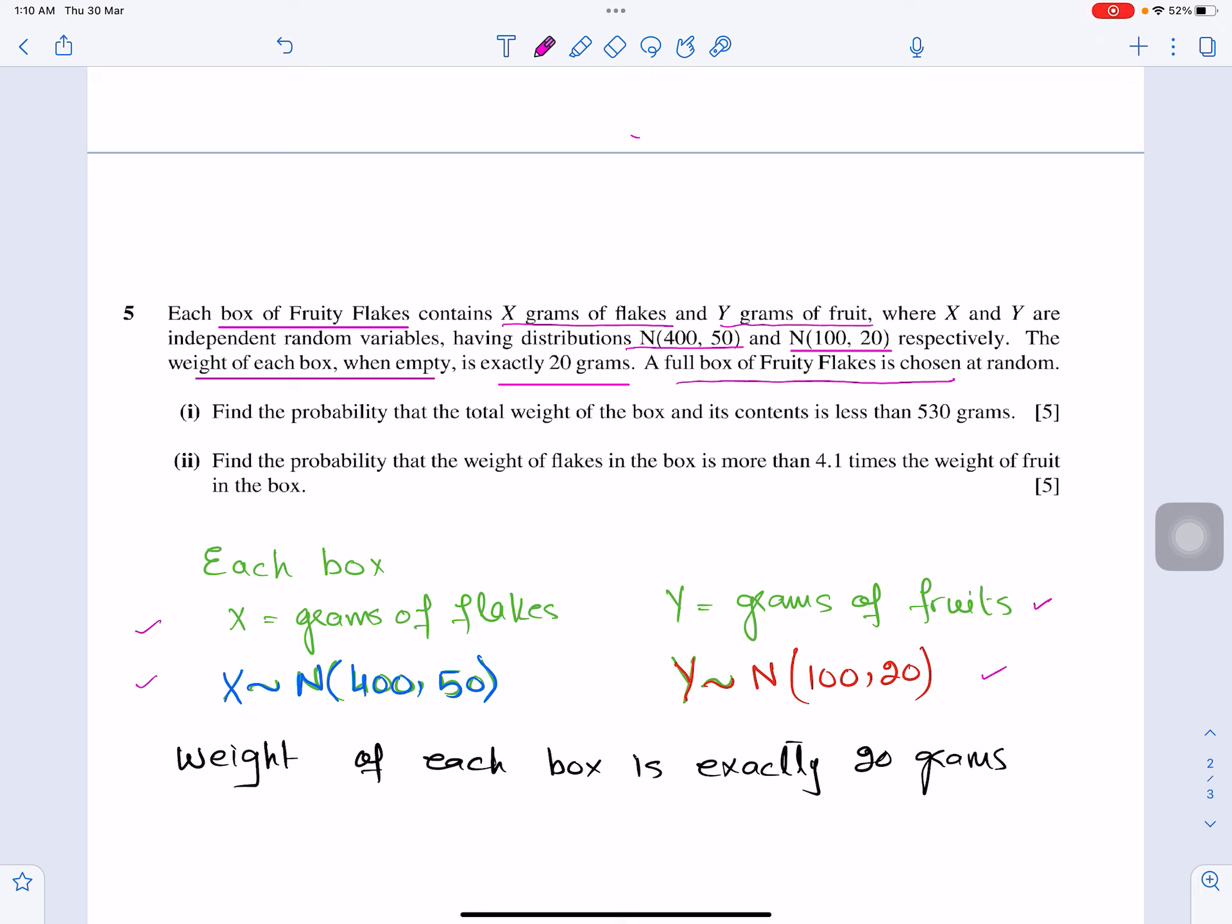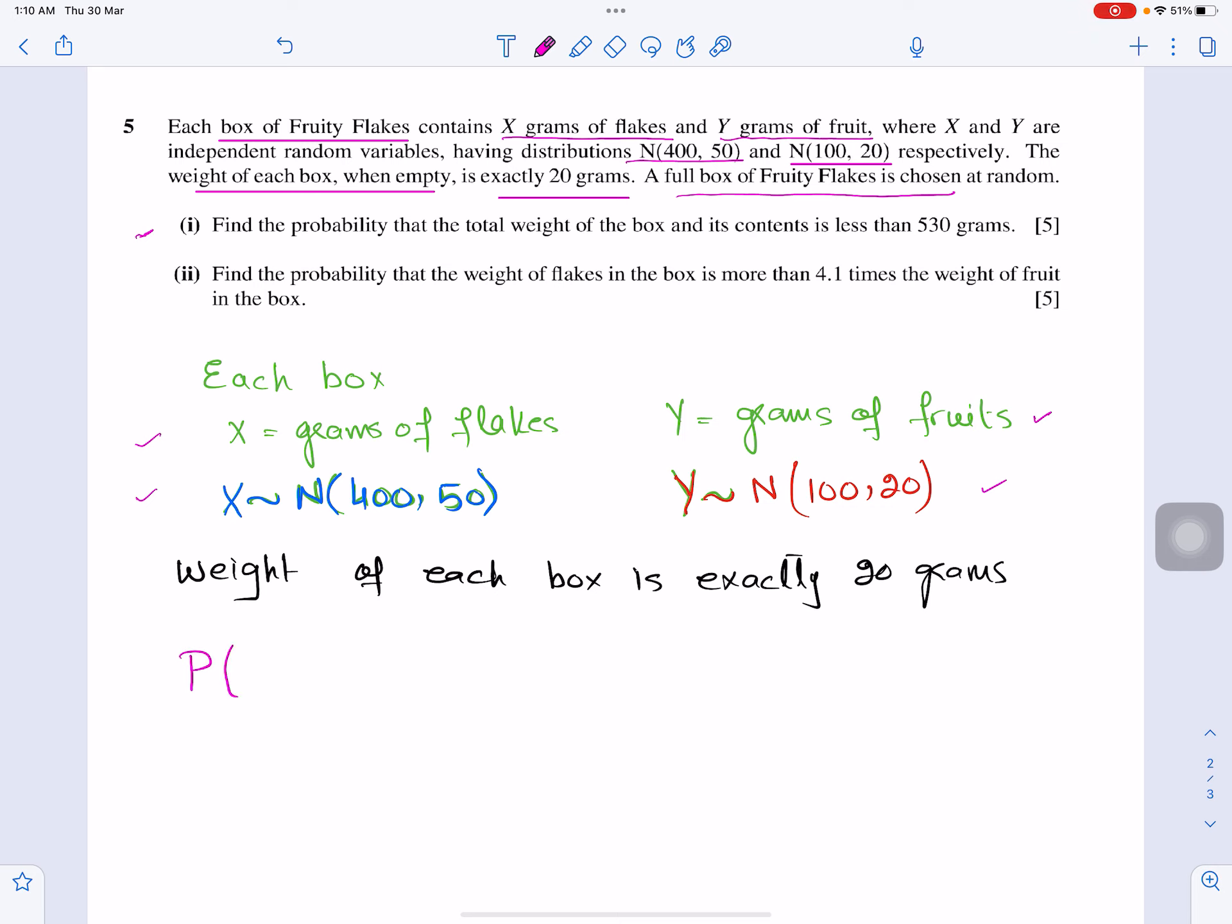When you are selecting a box, it is the weight of the box, the weight of the fruits, and the weight of the flakes. The first part is find the probability that the total weight of the box and its contents is less than 530 grams. So basically, the question is talking about probability of T is less than 530 grams. Now the question is, do you have the distribution for total weight? Because this blue and red distribution is individually for flakes and fruit. So basically, you have to find it out, which you can use here in this question. T equals the weight of the box, plus the weight of the flakes and fruits. I have to find out its mean and variance.